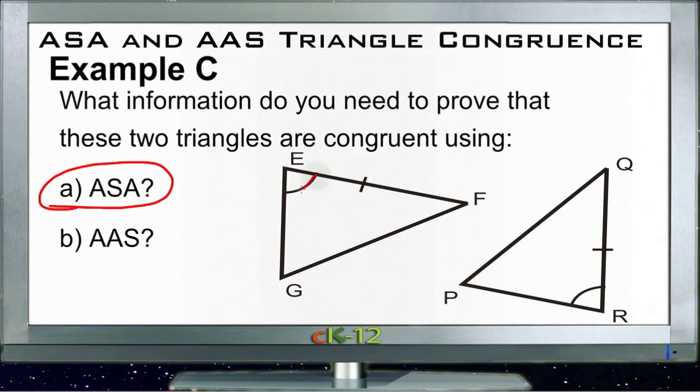We're told that angle E is congruent with angle R, and we're told that side QR is congruent to side EF. So in order to get angle side angle, we need to know the angle on the other end of that side. So over here, that would be angle F. We'd have to know that angle F was congruent to angle Q. If that was the case, then we could use angle side angle.